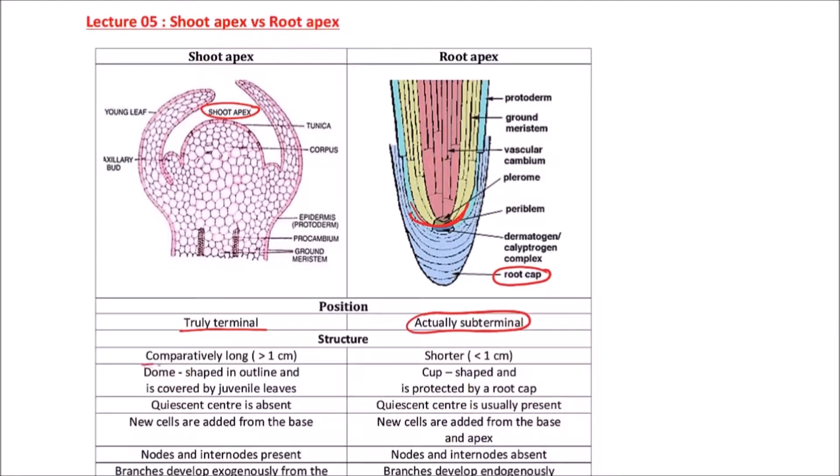In terms of structure, the shoot apex is comparatively longer, greater than one centimeter. The root apex is usually less than one centimeter. The shoot apex is dome-shaped and covered by juvenile leaves, while the root apex is cup-shaped and protected by the root cap.